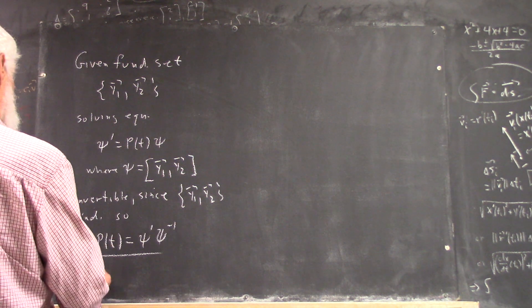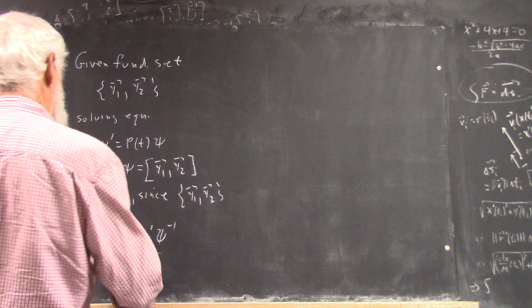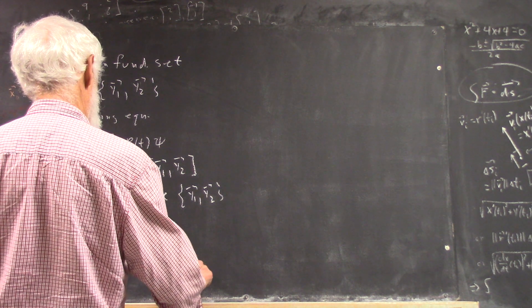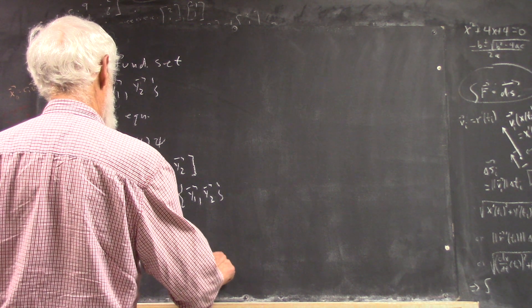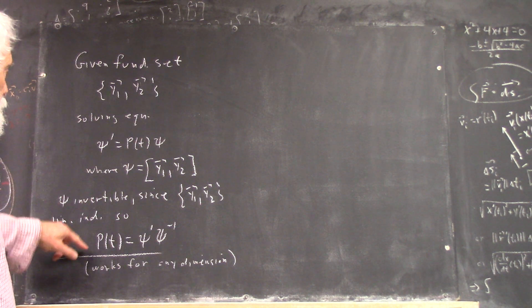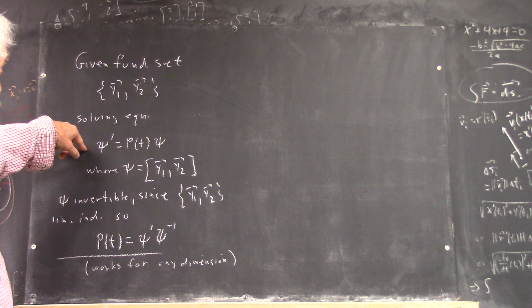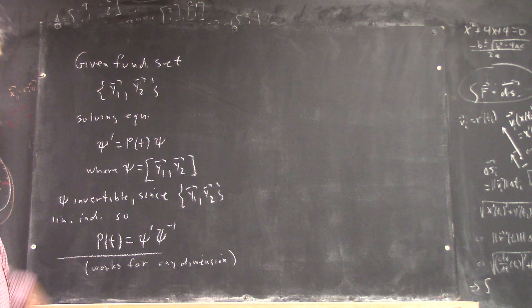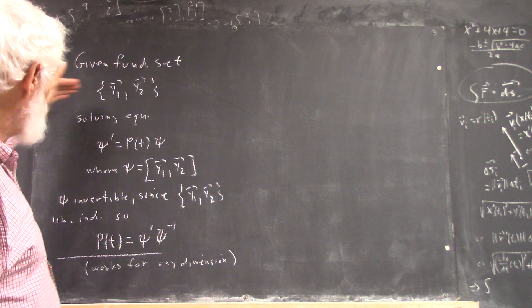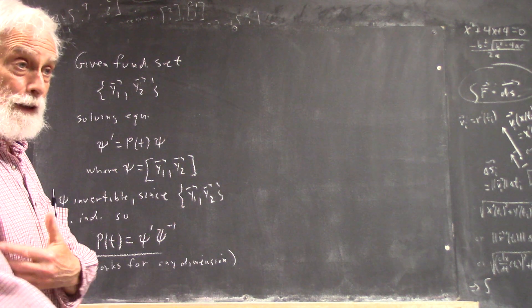So this works for any dimension. There's nothing in the argument from here—the fact that this follows from this doesn't depend on ψ being 2 by 2, but n by n. And of course, any fundamental set for a system of n equations is going to have n vectors.